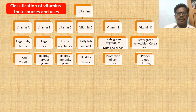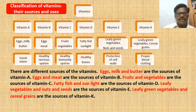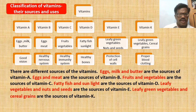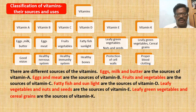Now we can ask the students to observe the picture and write a few sentences about the sources of vitamins. There are different sources of vitamins. Eggs, milk, and butter are the sources of Vitamin A. Eggs and meat are the sources of Vitamin B. Fruits and vegetables are the sources of Vitamin C. Fatty fish and sunlight are the sources of Vitamin D. Leafy vegetables, nuts, and seeds are the sources of Vitamin E. Leafy green vegetables and cereal grains are the sources of Vitamin K.